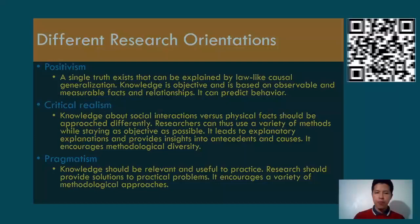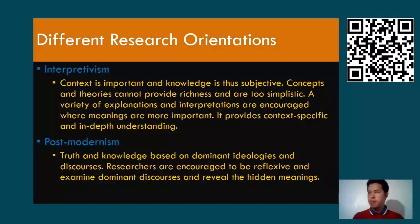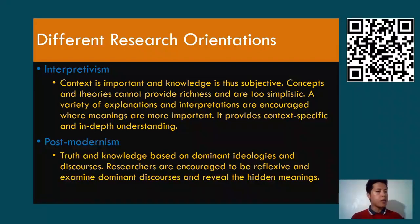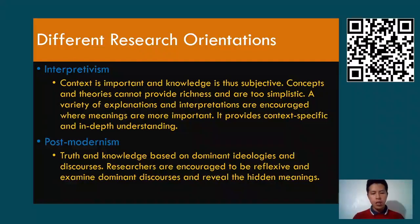Next is interpretivism: context is important and knowledge is thus subjective. Concepts and theories cannot provide richness and are too simplistic; a variety of explanations and interpretations are encouraged, where meanings are more important. It provides context-specific and in-depth understanding of specific phenomena. Research on literature and understanding literary works is more or less in the context of interpretivism. Next is post-modernism: truth and knowledge are based on dominant ideologies and discourses. Researchers are encouraged to be reflexive, examine dominant discourses, and reveal the hidden meanings of things.